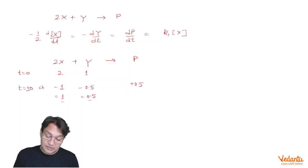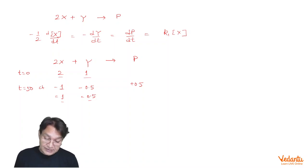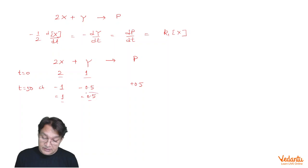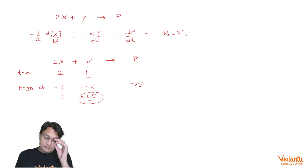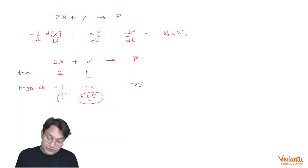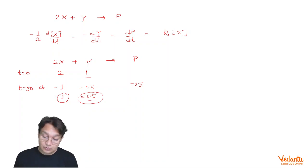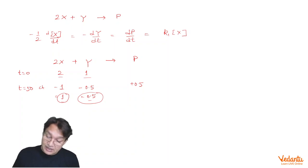This is first order with respect to X as given. Initially we started with 2 and 1 moles of X and Y respectively. At t = 50 seconds, Y remaining is 0.5, meaning 0.5 moles of Y has reacted, so 1 mole of X has reacted, leaving X = 1. This gives us the clue that the concentration of the reactant decreased to half in 50 seconds, which means t½ = 50 seconds.